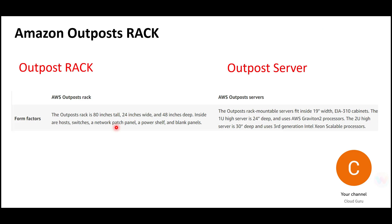With Outpost Rack, there is an 80-inch tall, 24-inch wide, 48-inch deep box that will come to your premises. It will have its power shelves, blank panels, switches, hosts, and so on. Similarly, for Outpost Servers, there would be a mountable server with 19-inch width that fits in standard cabinets.